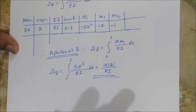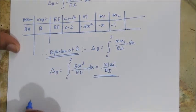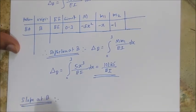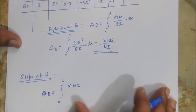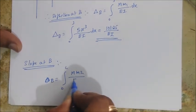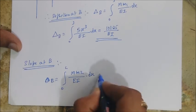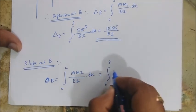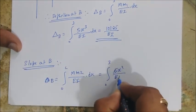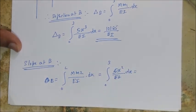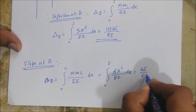It's a very simple method, unit load method, it's a simplified form. Now let's find the slope. Slope at B: theta B is equal to integration 0 to L, M times M2 by EI into dx. Now 0 to 3, M is 5X squared, so answer is 5X squared by EI into dx. X squared, if you solve it, we'll get 45 by EI.